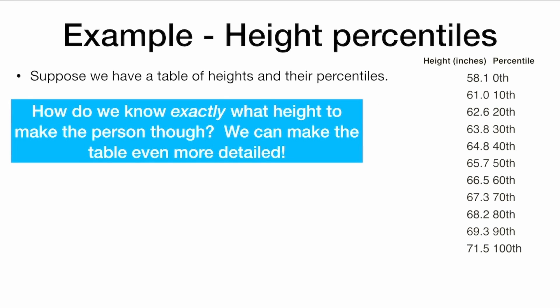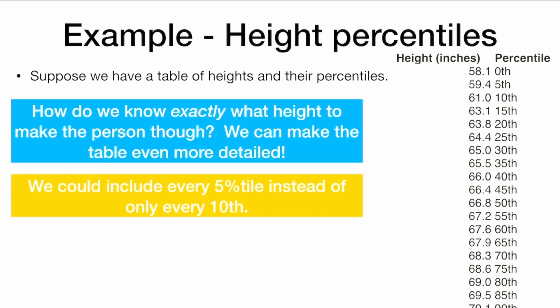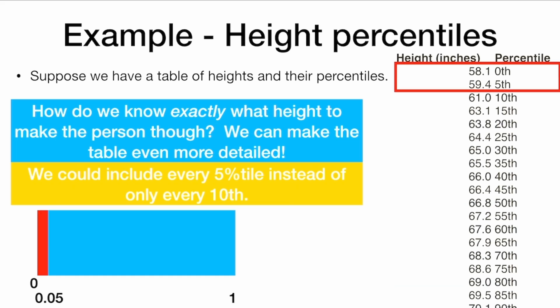How do we know exactly what height to make the person though? We can make the table even more detailed. We could include every 5th percentile instead of only every 10th. Then, when we generate a number between 0 and 0.05, we could generate a number between the 0 and 5th percentile, between 58.1 and 59.4.